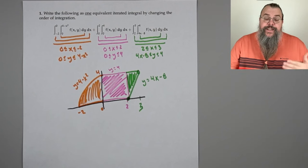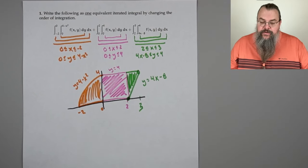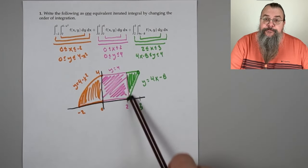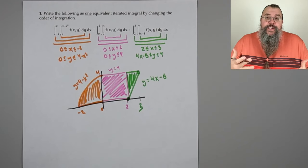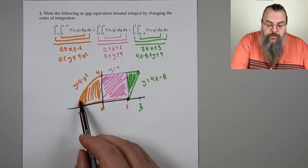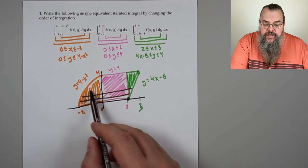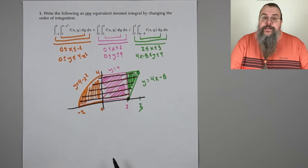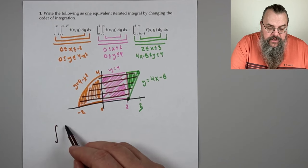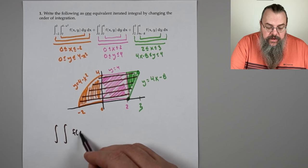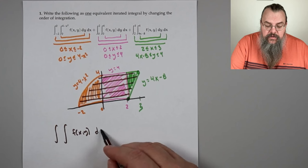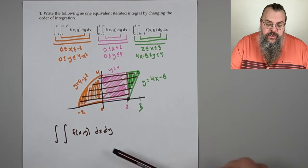Notice that in each of these integrals it's a dy dx integral, set up to do vertical slicing. If we're going to change the order, we switch to horizontal slices. So instead of dy dx, we're going to do dx dy. Let's start with the outer layer: where does y go? The bottom is y equals 0 and the top is y equals 4, so y goes from 0 to 4.